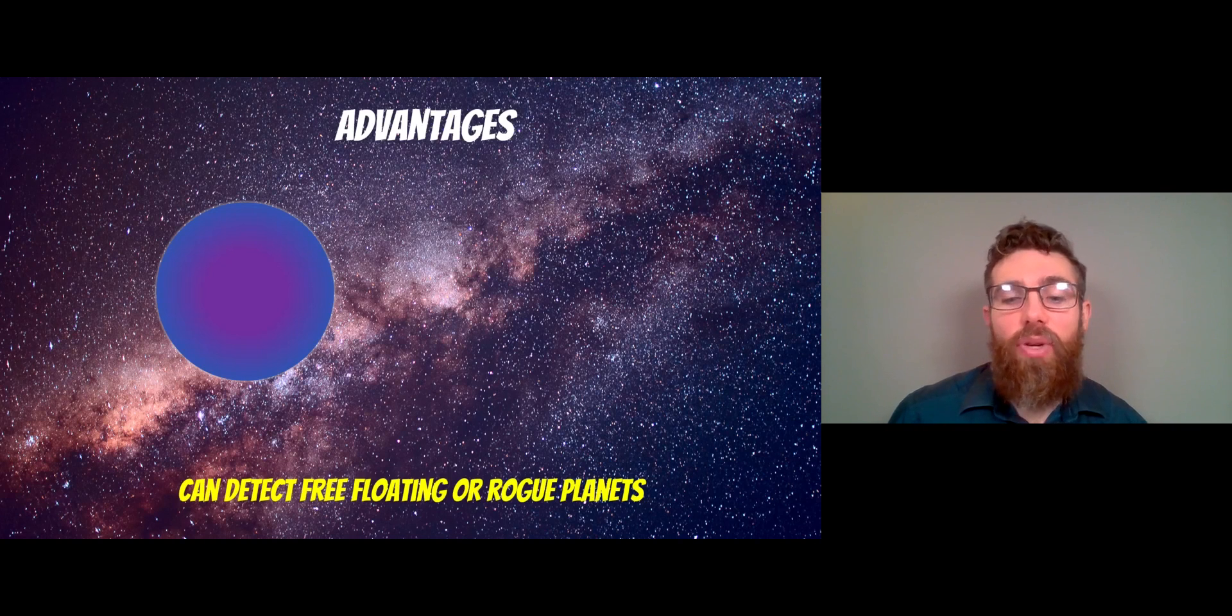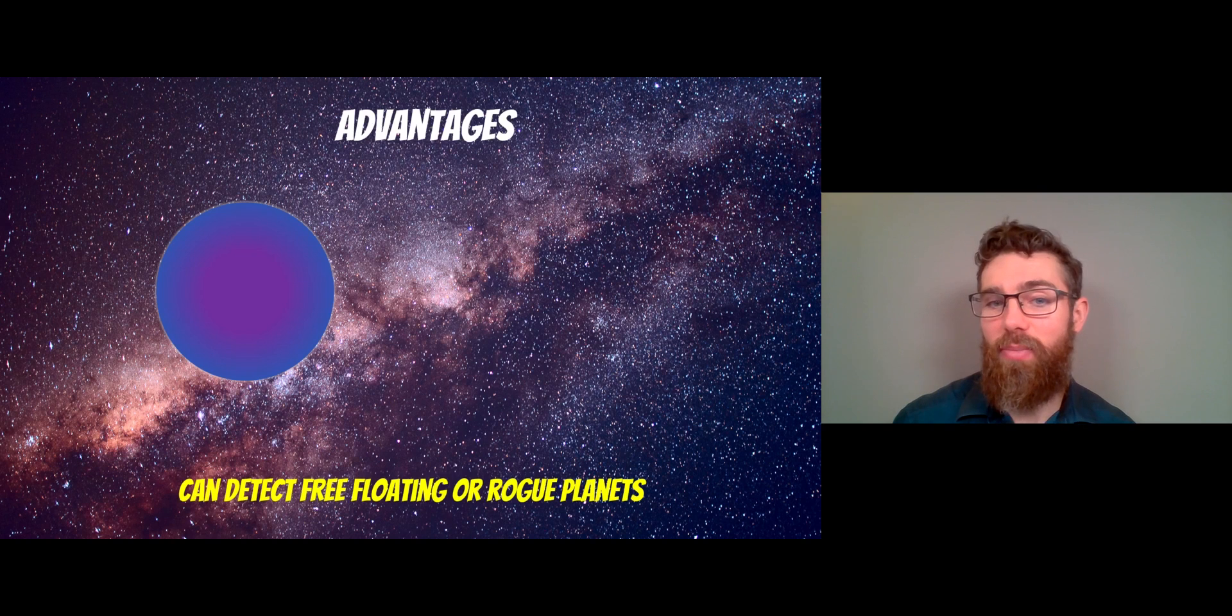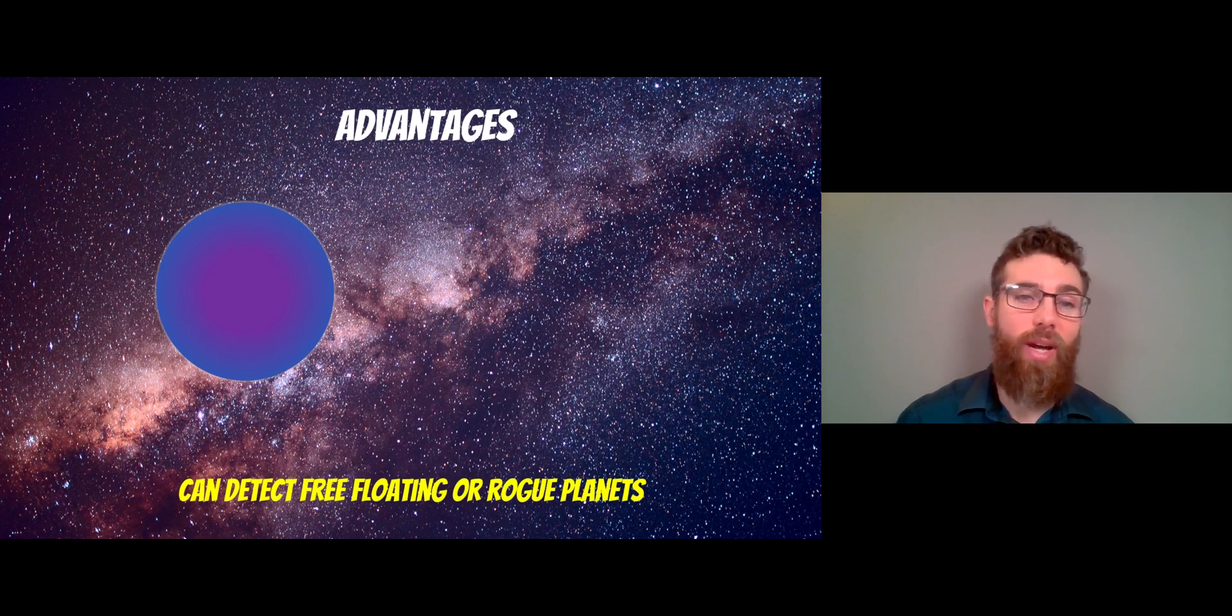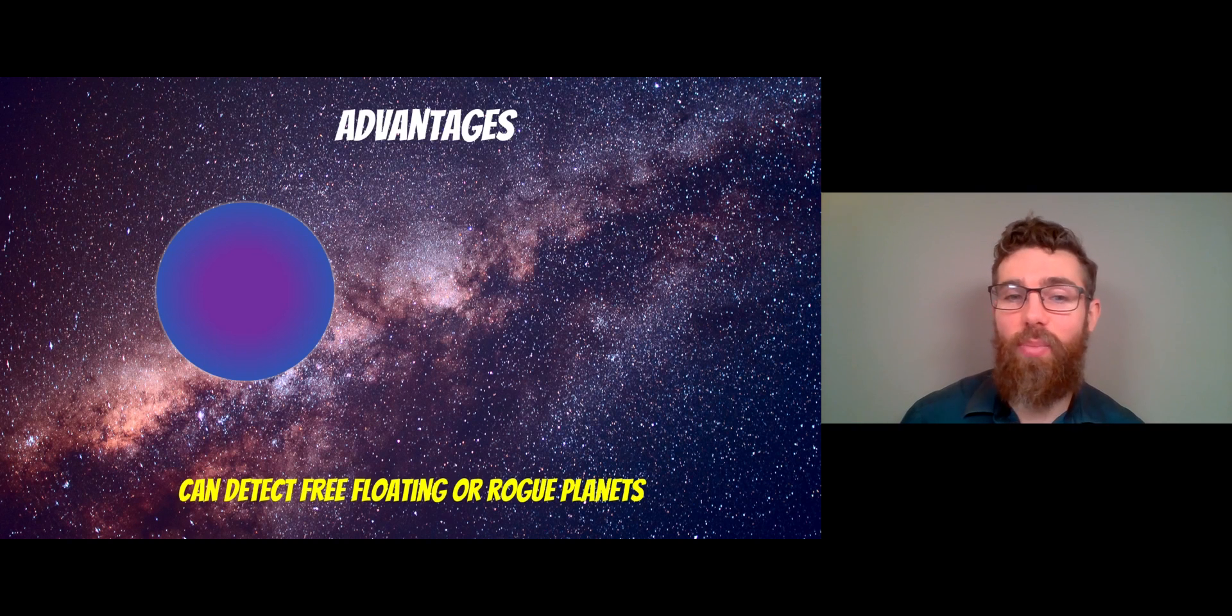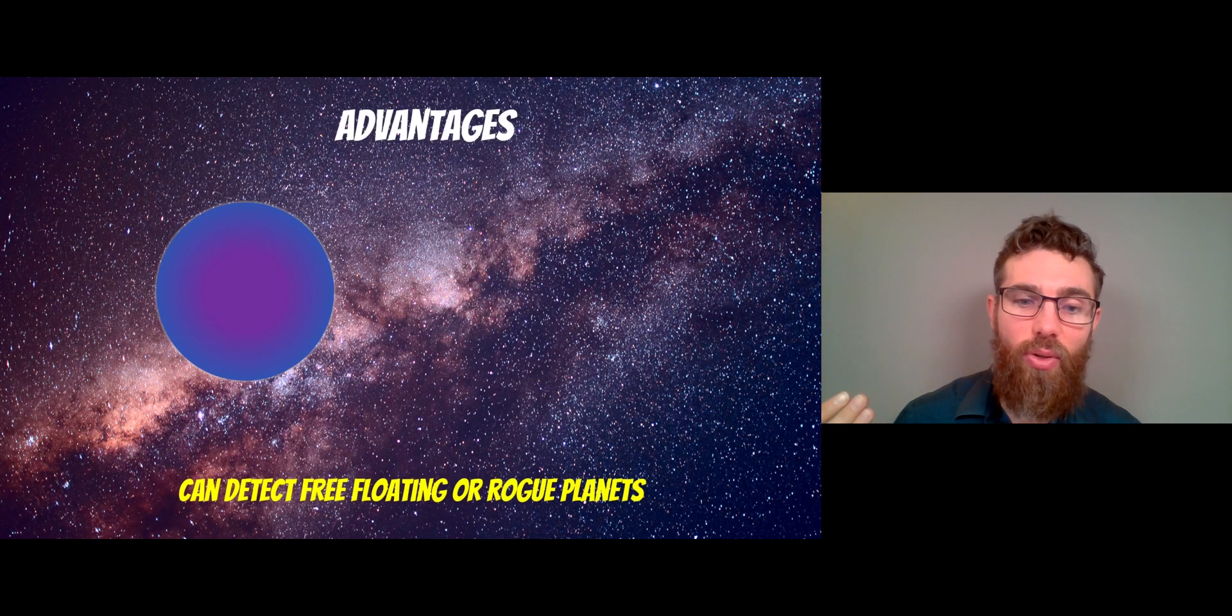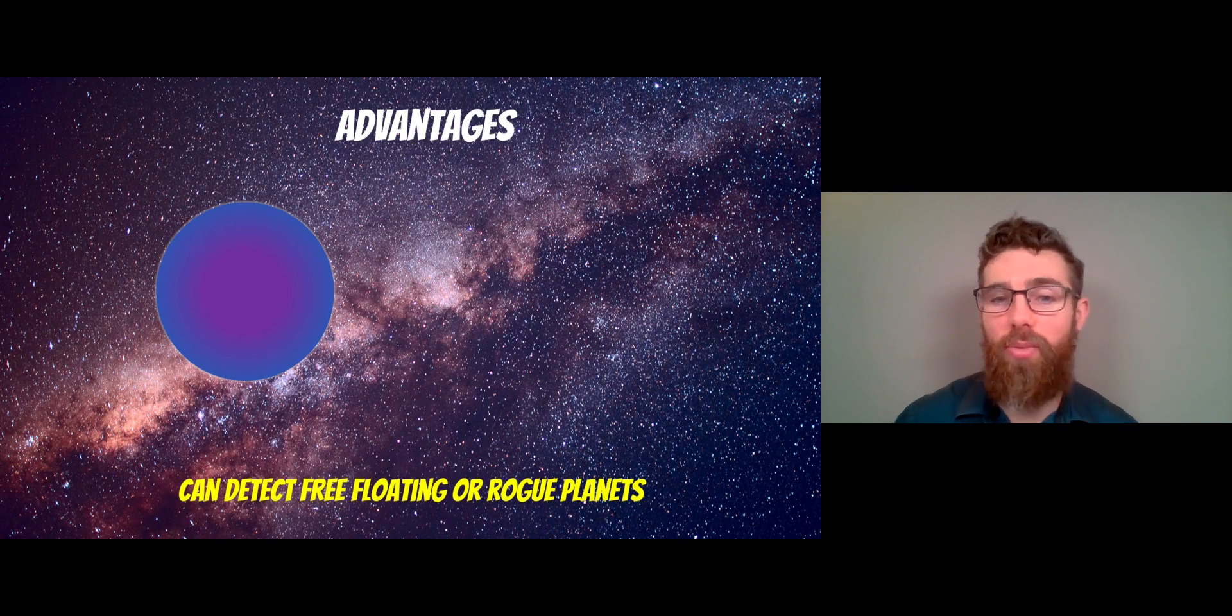And also, it can detect free floating planets or rogue planets. So these are planets that have been ejected from their system. During the formation process, planets can get ejected as they interact and scatter each other. We suspect it's happened in our system at some point, and then you have these free floating planets. So it's a good method for detecting those, because they're not orbiting a star, so some of the other methods are not viable. It's a good method for free floating planets.